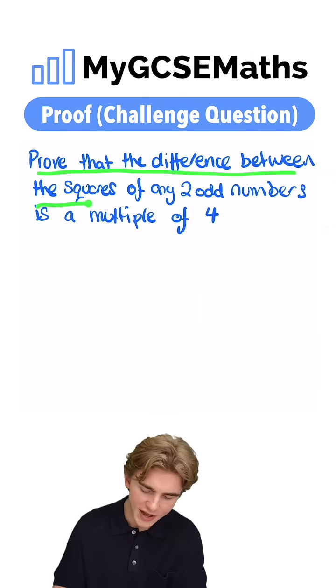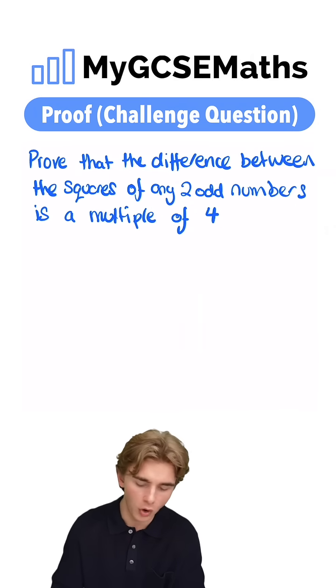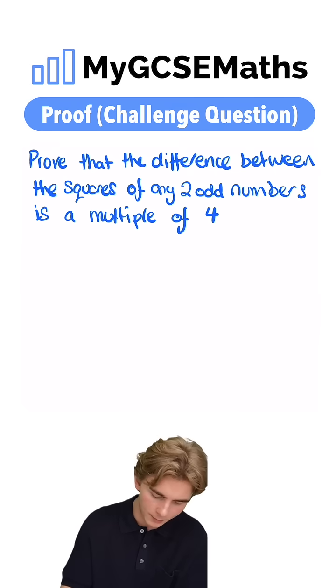Prove that the difference between the squares of any two odd numbers is a multiple of four. What are we going to do? We're going to firstly write out two generic odd numbers.